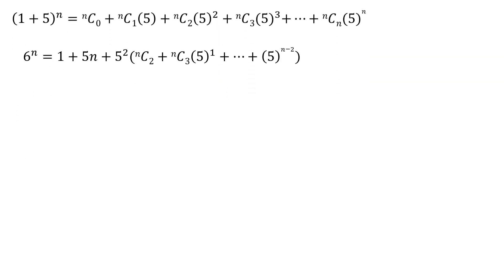This gives us 6 raised to the power n equals 1, plus 5 times n, plus 5 raised to the power 2 times n choose 2, plus n choose 3 times 5, and so on, plus 5 raised to the power n minus 2.